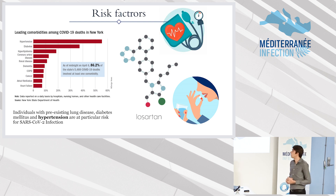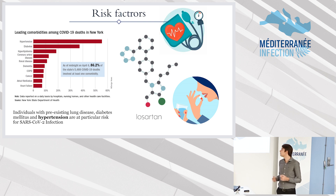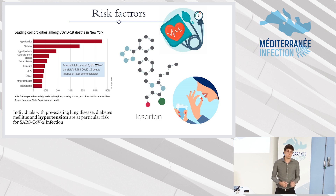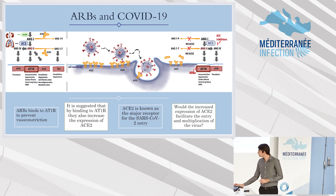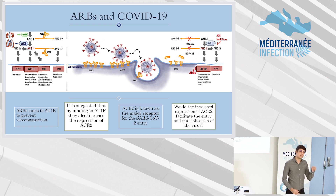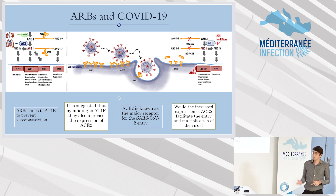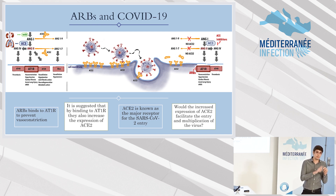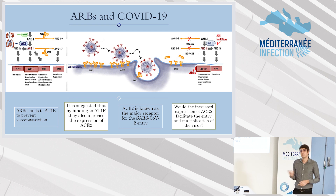People who have hypertension most of the time take medicines to control blood pressure. One of the most used in the world is Losartan — it's an angiotensin receptor blocker. It works by binding to a receptor called the AT1 receptor to prevent vasoconstriction. And when it binds, it's suggested that it increases the expression of ACE2, and ACE2 is the major receptor for SARS-CoV-2.